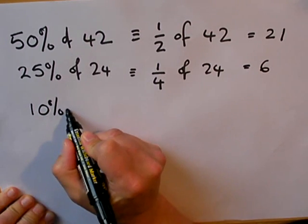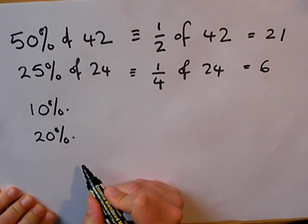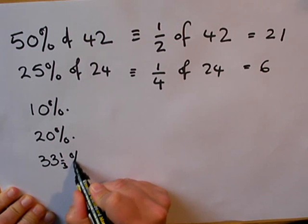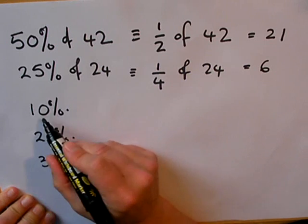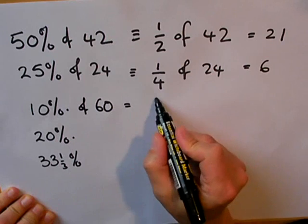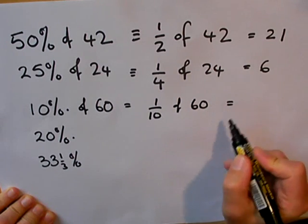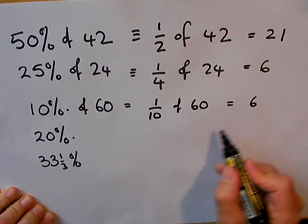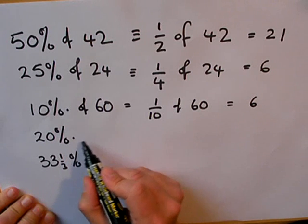10% is equal to one tenth. So let's work one out: 10% of 60 is the same as one tenth of 60. In order to find out one tenth we divide by 10, so the answer is six. 20% is the same as a fifth.